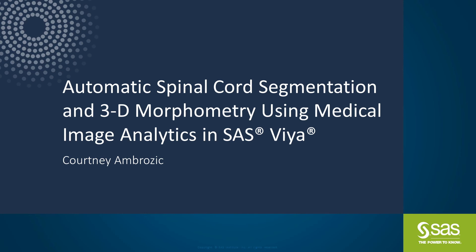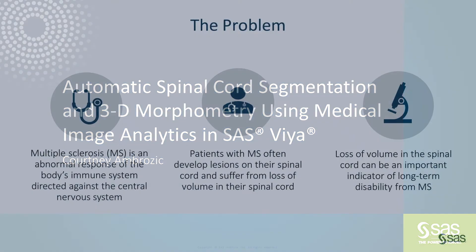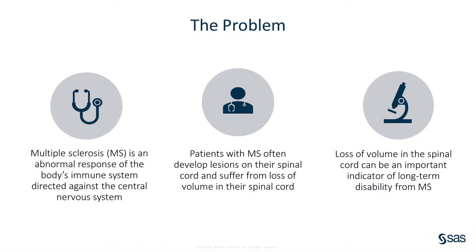These action sets provide you with powerful tools to create automatic biomedical image analysis pipelines that solve real-life problems. To give a little context to this automatic segmentation pipeline, let's start by defining the biomedical problem we'll be solving. Multiple sclerosis is a disease of the immune system that can damage the brain and the spinal cord. Patients with MS often start to develop lesions on their spinal cord, and they also tend to lose volume in their spinal cord over time. This loss of volume can be an important biomarker of the long-term effects of MS, so it's important to track spinal cord volume of MS patients over time.